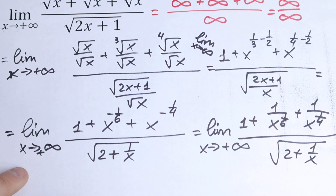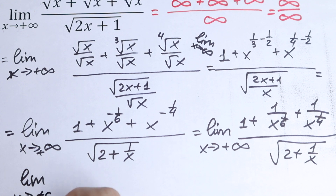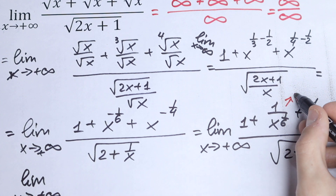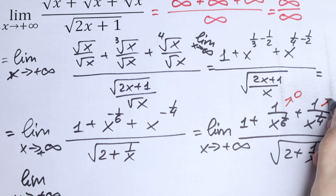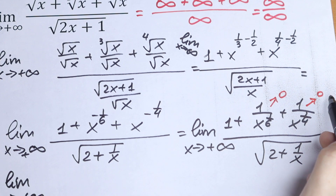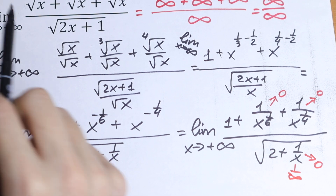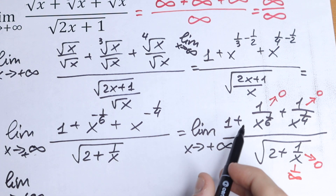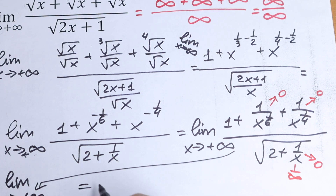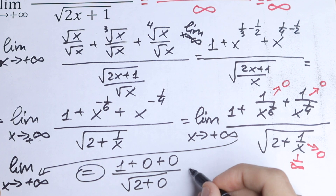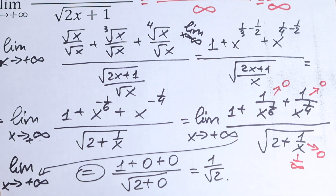Now we can plug in x approaching plus infinity. The term one over x to the one-sixth approaches zero because it's one over infinity. Similarly one over x to the one-fourth approaches zero, and one over x in the denominator also goes to zero. So as a result we get one plus zero plus zero over square root of two plus zero, which equals one over square root of two. And this is our answer.